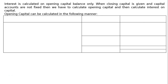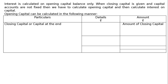We will draw three columns: one is for particulars, the next one is for details with rupee symbol, and the third one will be for amount with rupee symbol. We start with the opening capital or capital at the end — the amount of closing capital, which is given to us. We have to add three things and deduct three things.